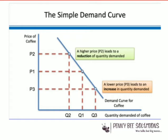The demand curve slopes downward from left to right because the quantity demanded is likely to be higher at lower prices and lower at higher prices. So if price increases, demand is likely to fall for most products; if price decreases, demand is likely to increase.